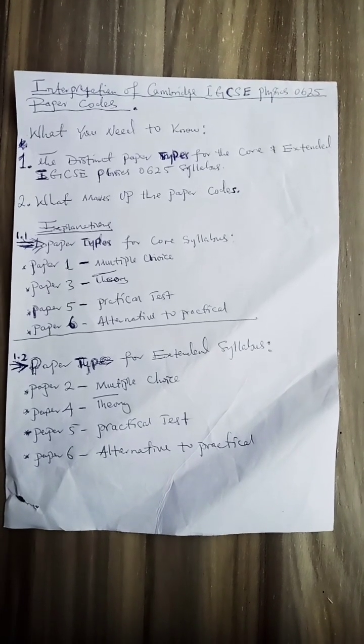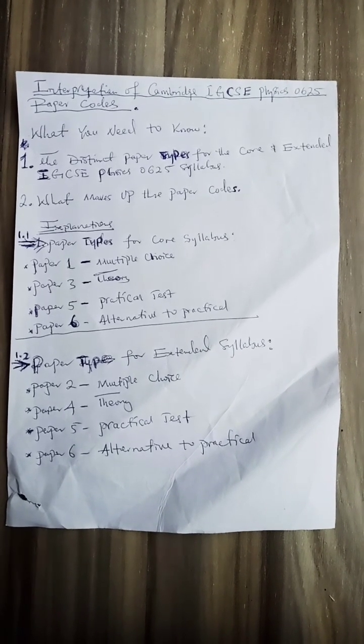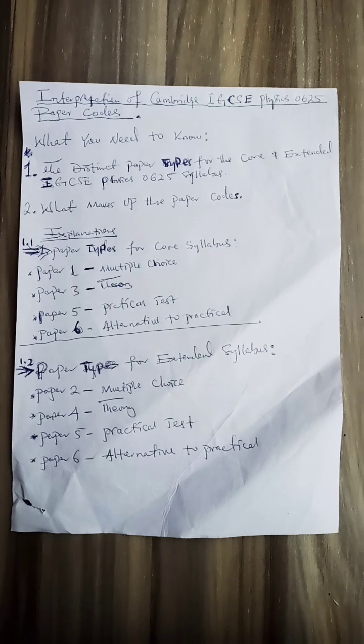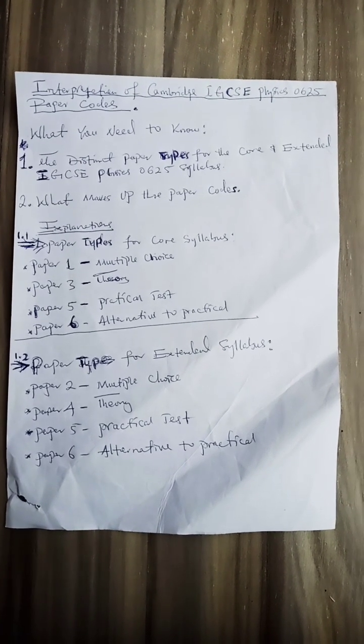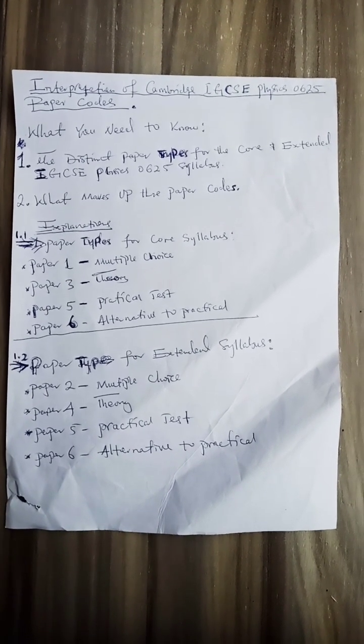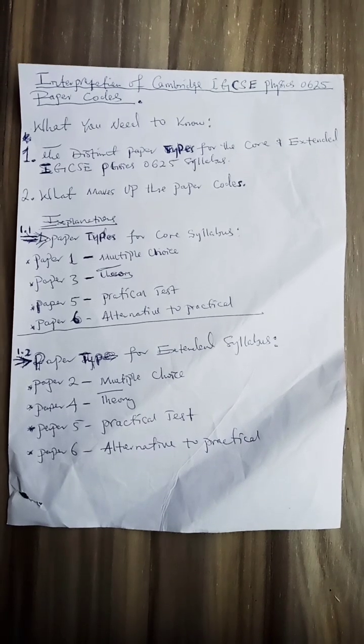To get an A star in Cambridge IGCSE Physics 0625, you need to have mastery knowledge of the paper codes. This document before you here is very, very important.